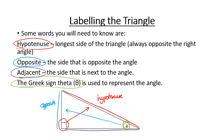If, for example, theta was then put up at the other vertex instead, the opposite and the adjacent would switch, but the hypotenuse would stay exactly the same.